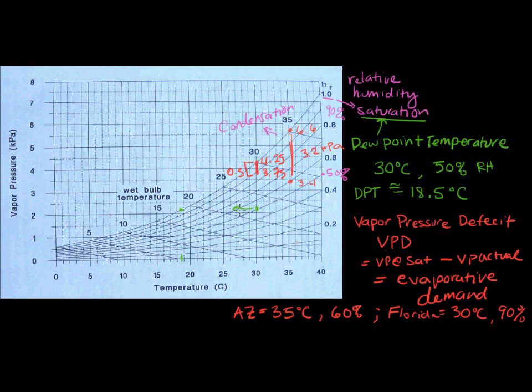So what does this mean biologically? It has implications for evaporation and transpiration. If you're thinking about plants and whether they're water stressed or how much they're transpiring - if you have a plant in Arizona, it's going to transpire more than a plant in Florida. You can also think about evaporative cooling - sweating is really important for animals and humans. When you sweat, it's a mechanism to cool your body: you produce water on the outside of your body, and as it evaporates it actually absorbs heat and cools you. So when there's a higher vapor pressure deficit and greater evaporative demand, that sweat is evaporating quicker, and you're cooling yourself more rapidly than when you have a smaller vapor pressure deficit.